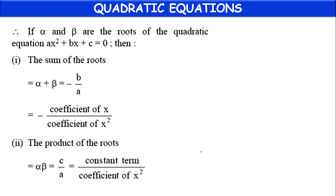So if alpha and beta are the roots of a quadratic equation, then alpha + beta = -b/a, which means minus coefficient of x divided by coefficient of x². That is the formula for sum of roots. And the product of roots formula is alpha × beta = c/a, where c is the constant term and a is the coefficient of x² term. You have to remember these two formulas carefully, children, so then only we can solve the quadratic equations directly.